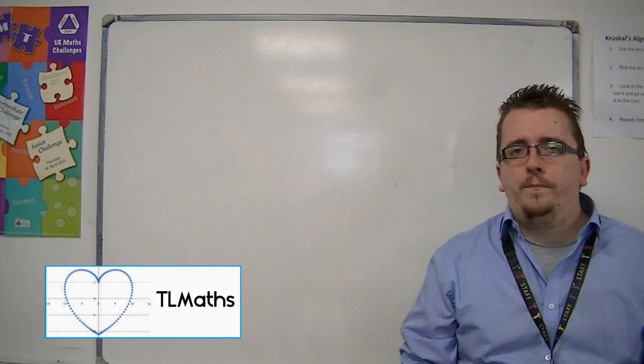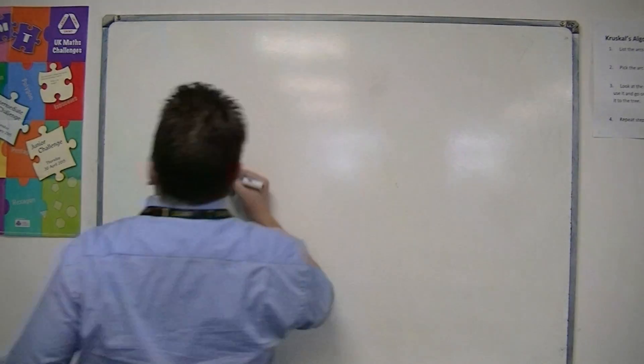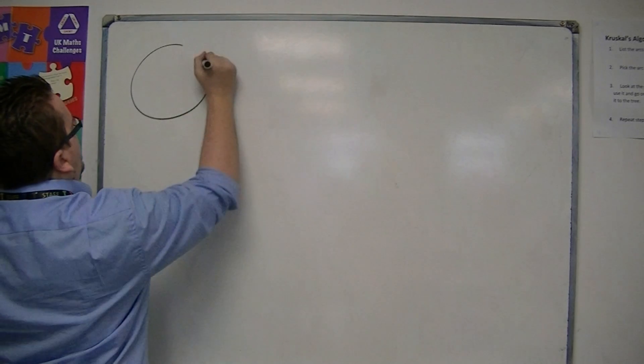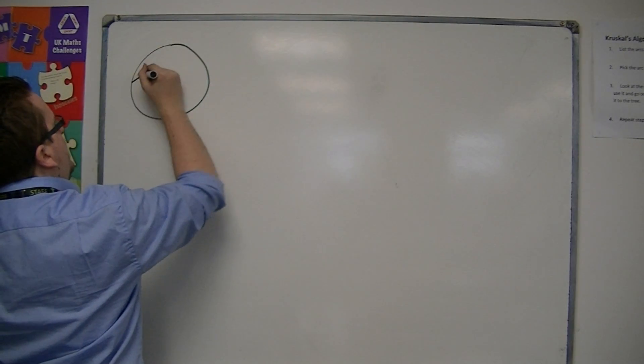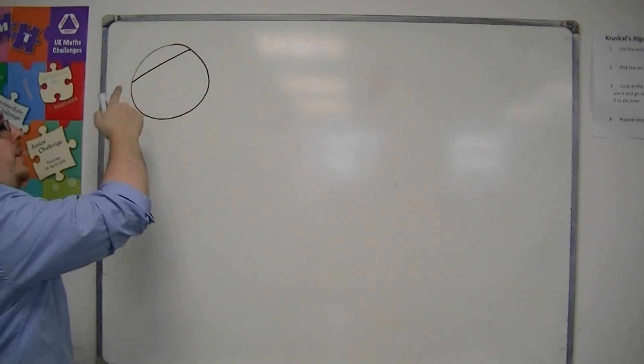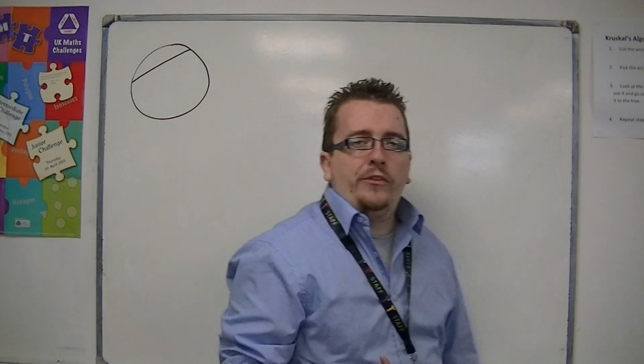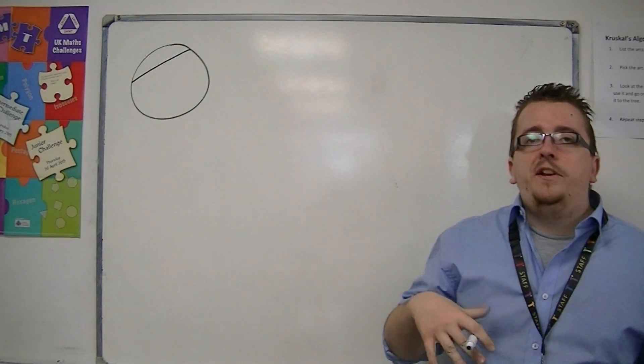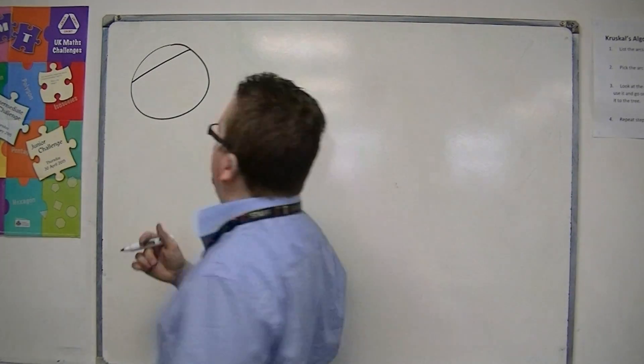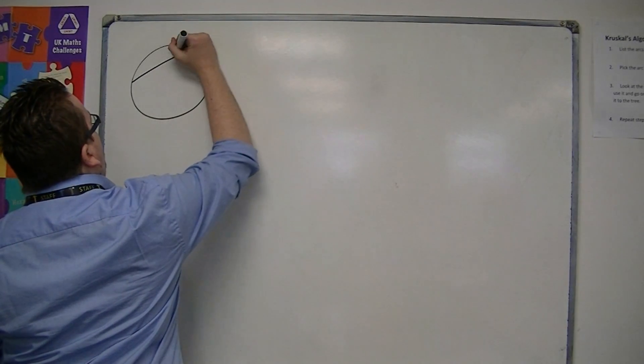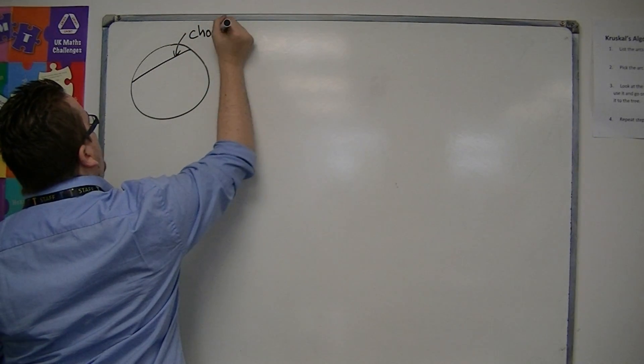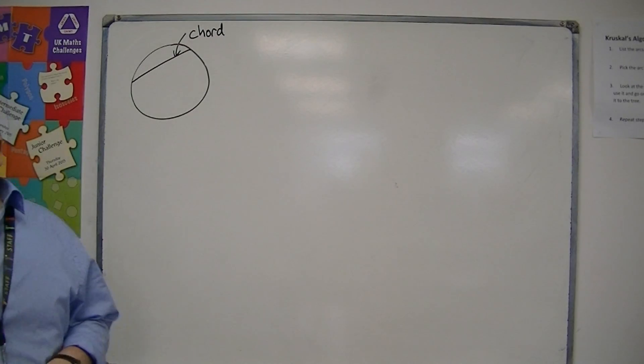OK, so if I have a circle and I draw any old line from one point on a circle to another point on the circle, then this line is called a chord. So this is a chord, C-H-O-R-D.